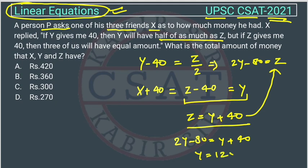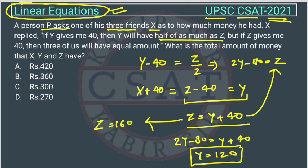So 80 goes to the other side as positive, giving us 40 plus 80 equals 120. Therefore y equals 120. If y is 120, then from the equation z equals y plus 40, z will be 160.